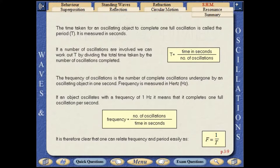If an object oscillates with a frequency of one hertz, it means that it completes one full oscillation per second. It is therefore clear that one can relate frequency and period easily as f equals one over t.